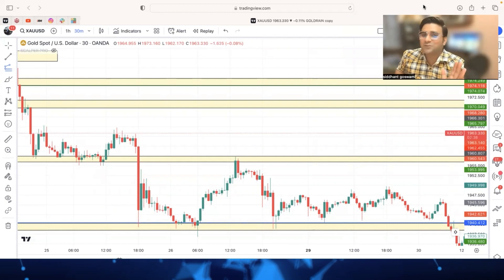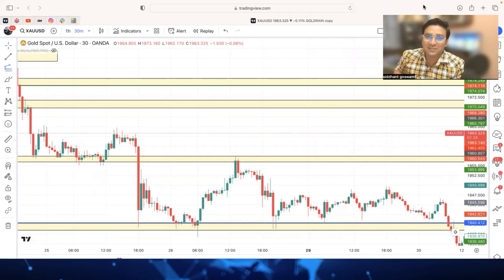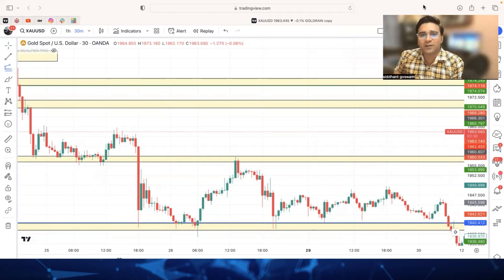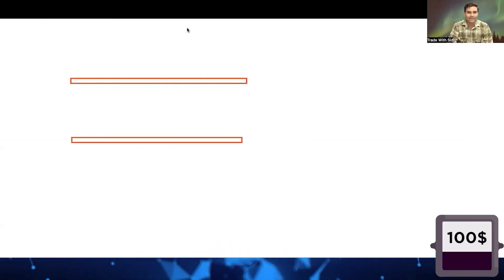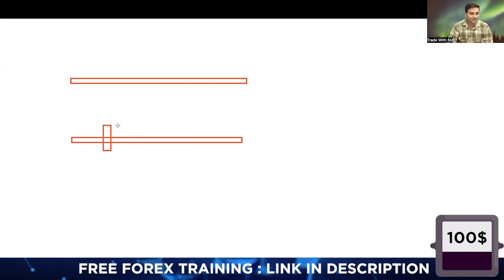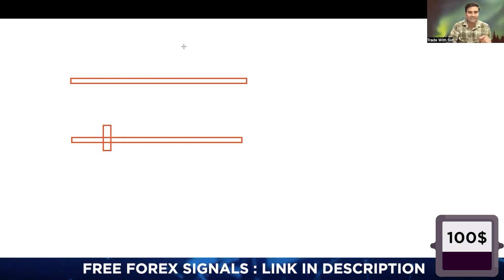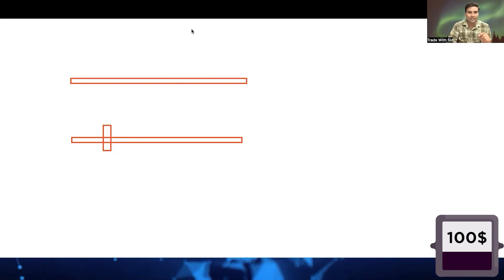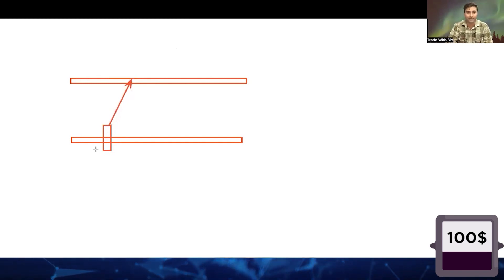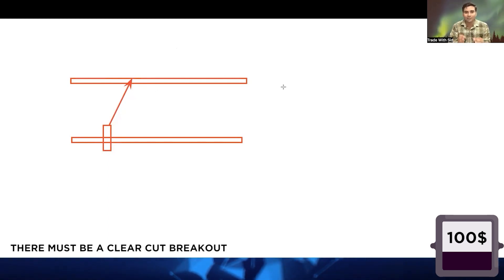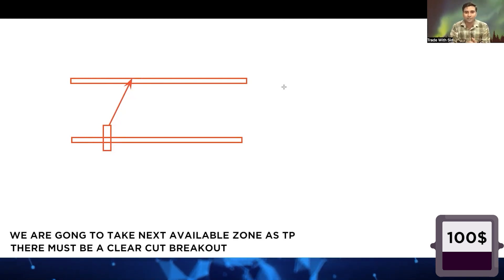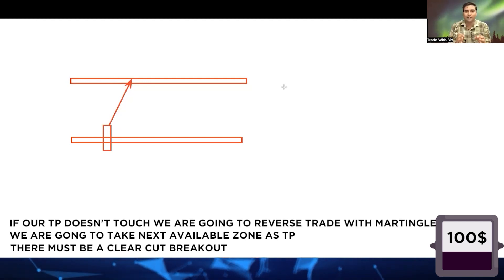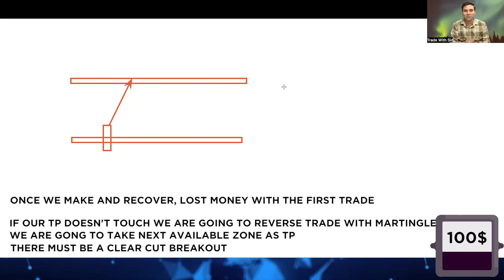First you need to understand the strategy, then it will be easy to understand the back-testing, because that is what you are going to apply in your forex account. The strategy: this is our resistance, this is our support. As soon as we see the breakout of the resistance — once the resistance breaks and price closes above it — we take a buy entry at the closing price, with the next zone as our take profit. Condition one: there must be a clear breakout. Condition two: take the next available zone as take profit. Condition three: if take profit does not get hit, we take a reverse trade with martingale.